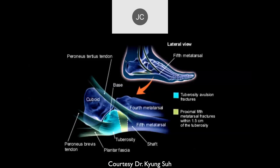Now let's talk about the base of the fifth metatarsal, which is a common area of injury. Classically, there are three types of fractures at the base of the fifth. One is an avulsion fracture, predominantly from traction from the peroneus brevis and plantar fascia attachment to the base of the fifth — really more the tip — which occurs at the tuberosity. Then there's a 'no-man's land' between the tuberosity and the diaphysis of the fifth metatarsal, with one and a half centimeters as the typical cutoff from the end of the bone toward the metaphysis.